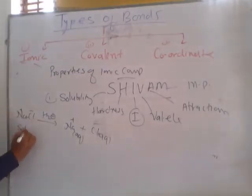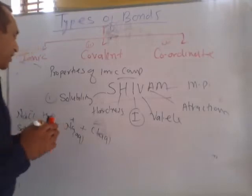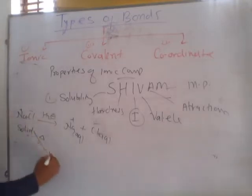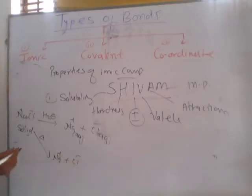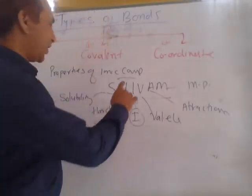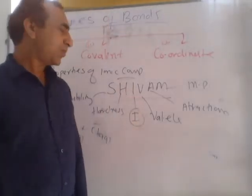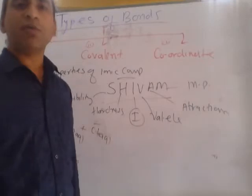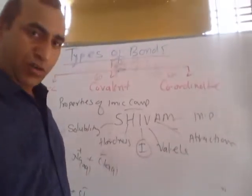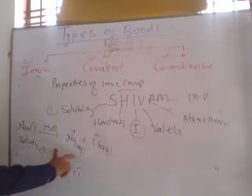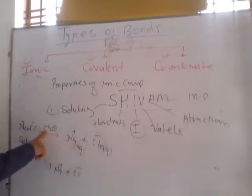In solid state, ions are present but strongly connected by ionic bond — electrostatic bond — so ions are not free to move. But when we dissolve this compound in water, or when we provide heat, these ions become separate. If ions become separate by heating or in water, these ions are responsible for current. So ionic compounds are non-conductors in solid state due to strong bonding between cation and anion, but are good conductors in their molten state or in their solution state dissolved in a polar solvent like water.